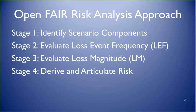In the OpenFAIR standard we follow a four-step approach. The first stage is to identify the scenario components. The two major components of the taxonomy are loss event frequency — that's the stage two analysis — and then stage three is to evaluate the loss magnitude. Based on those two factors, we can derive and articulate the risk in the final stage. This can be repeated for several different risk scenarios. In a typical risk analysis, you might analyze multiple threat scenarios to get an aggregate idea of the amount of risk you're facing.